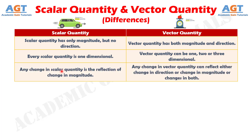Number three: any change in scalar quantity is the reflection of change in magnitude, whereas any change in vector quantity can reflect either a change in direction, a change in magnitude, or changes in both.